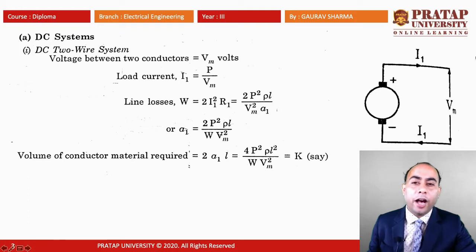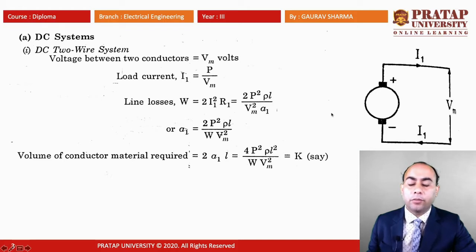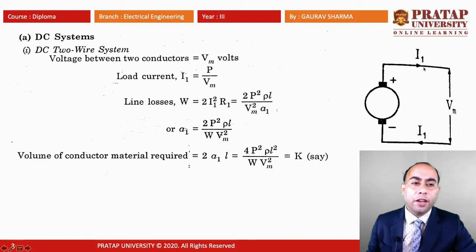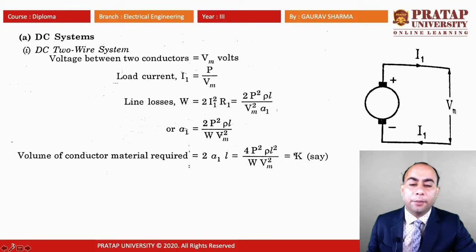Substituting the value of I1, the line losses equal 2P²ρL divided by VM²·A1, where R1 = ρL/A and A1 is the cross-sectional area. From this, A1 = 2P²ρL / (W·VM²). The volume of conductor material required, with two conductors, is 2·A1·L. Substituting the value of A1, this equals 4P²ρL² / (W·VM²). We set this equal to K as the reference value for comparison.